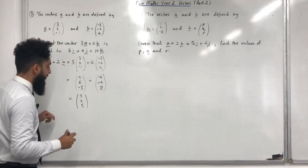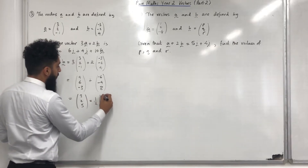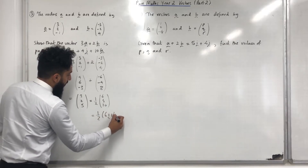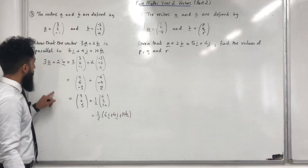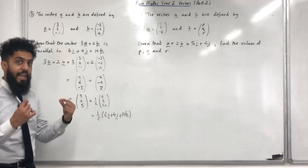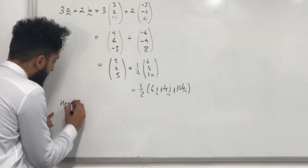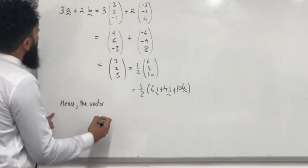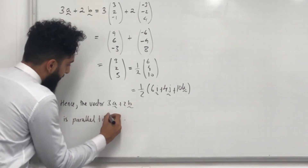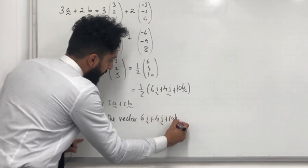We notice that (3, 2, 5) is a scalar multiple of the vector (6, 4, 10) — specifically, one half of (6, 4, 10). The vector (6, 4, 10) can be rewritten as 6i plus 4j plus 10k. Therefore, the vector 3a plus 2b equals one half of the vector 6i plus 4j plus 10k. That is, 3a plus 2b is a scalar multiple of 6i plus 4j plus 10k. Hence, the vector 3a plus 2b is parallel to the vector 6i plus 4j plus 10k.